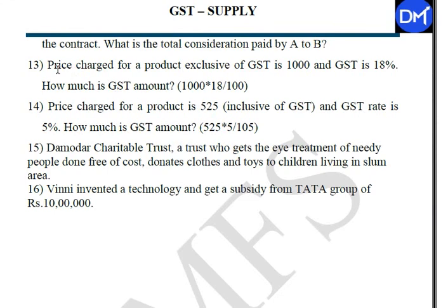The price charged for a product exclusive of GST is Rs.1,000 and GST rate is 18%. How much is the GST amount?